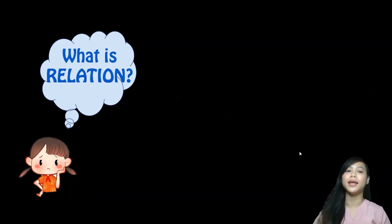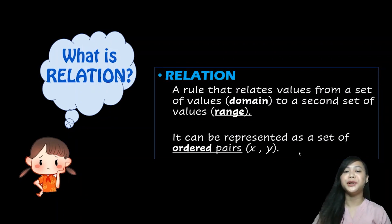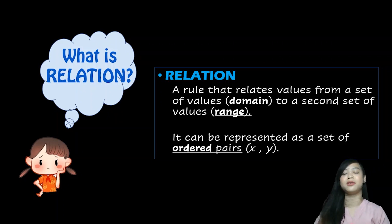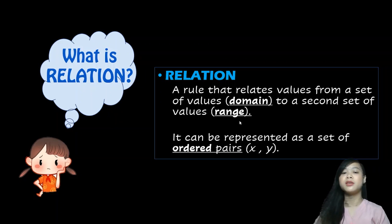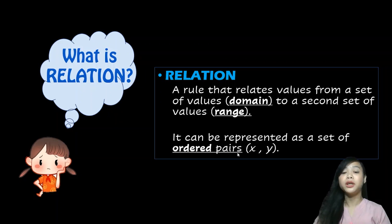A function is a relation. A relation is a rule that relates values from one set of values to another set of values. We have the domain and the range. A relation can also be represented as an ordered pair, denoted as (x, y).